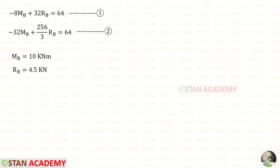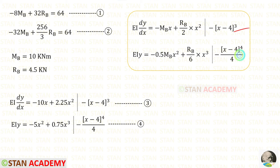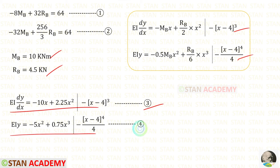Now we have two equations. Using a calculator to solve them — if you do not know how to solve two equations in a calculator, see the link in the description below — for Mb I have got 10 kNm and for Rb I have got 4.5 kN. Substituting Mb and Rb back into the slope and deflection equations gives us Equation 3 (slope) and Equation 4 (deflection).